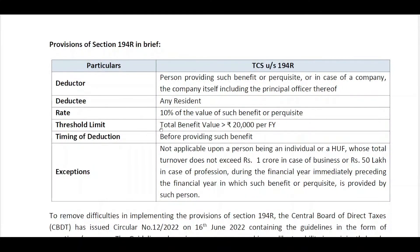There is a threshold limit of ₹20,000 per financial year prescribed. Below this threshold, there is no TDS. The timing of deduction is before providing such benefit — the deductor needs to ensure that applicable tax has been deducted or sufficient steps have been taken for deposit of the tax. The exception is for individuals or HUF whose business turnover is less than 1 crore and professional receipts less than 50 lakhs in the past year; the provision does not apply to them.